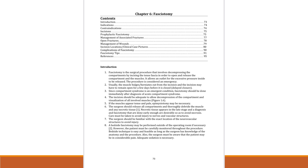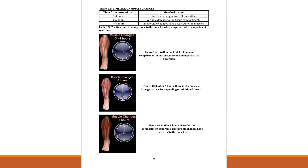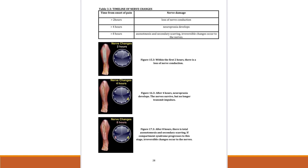One of the most important chapters is fasciotomy. The diagnosis of compartment syndrome should be done early and fasciotomy should be done urgently, because of the changes that can happen in the muscle if fasciotomy is not done in a timely fashion. Irreversible changes can happen to the muscle and to the nerves if fasciotomy is delayed.